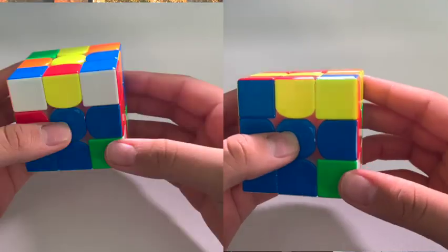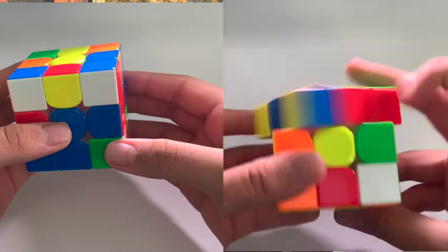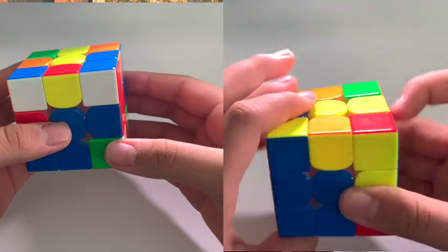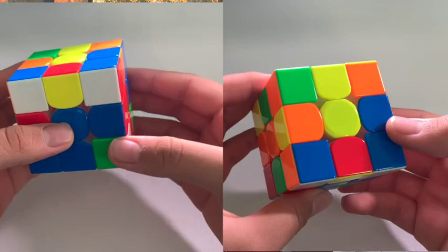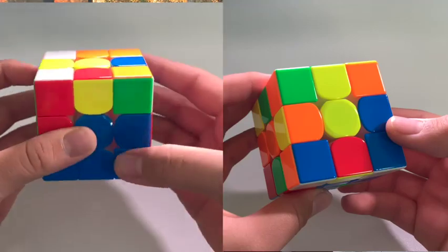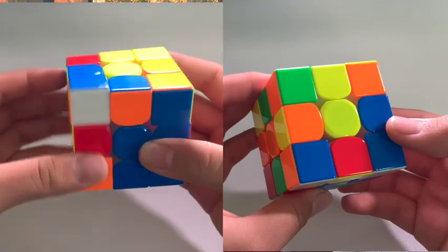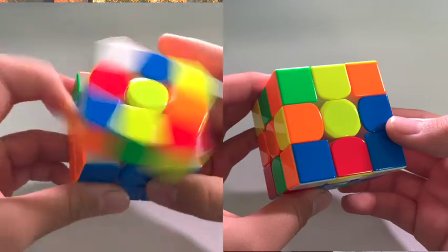Here we can see two examples of the exact same scramble. In the first one, I solved the pairs that I noticed first, which resulted in a much slower solve with many more pauses. Whereas in the second solution, I looked for the most optimal pairs, resulting in a much faster solve with way less pauses.